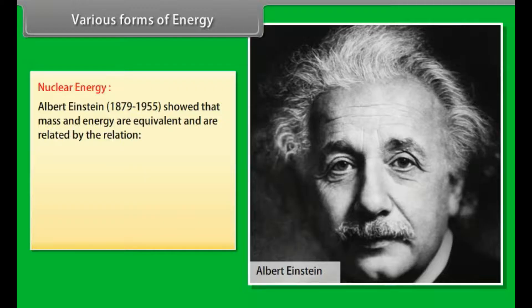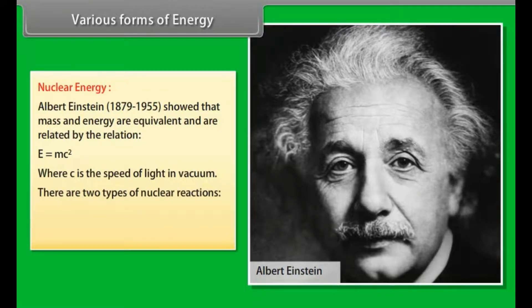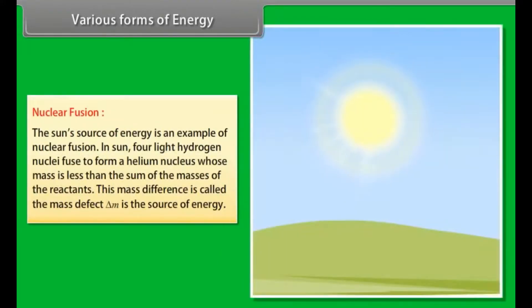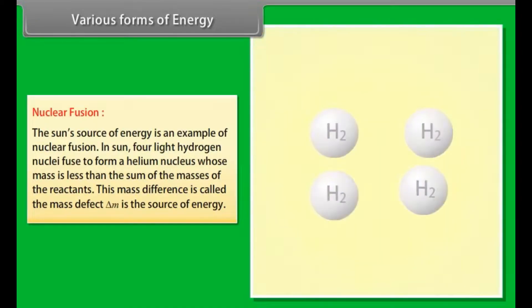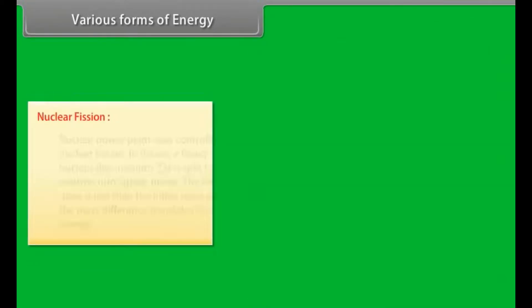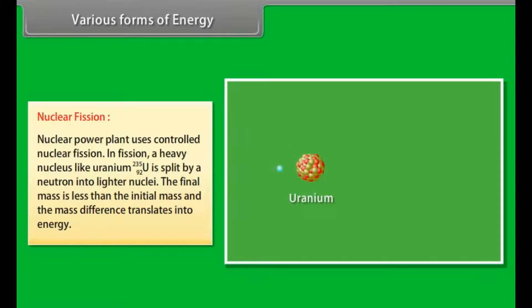Nuclear energy. Albert Einstein (1879-1955) showed that mass and energy are equivalent and are related by the relation E = mc², where c is the speed of light in vacuum. There are two types of nuclear reactions: they are nuclear fusion and nuclear fission reactions. Nuclear fusion: the sun's source of energy is an example of nuclear fusion. In sun, four light hydrogen nuclei fused to form a helium nucleus whose mass is less than the sum of the masses of the reactants. This mass difference is called the mass defect, Δm, is the source of energy.